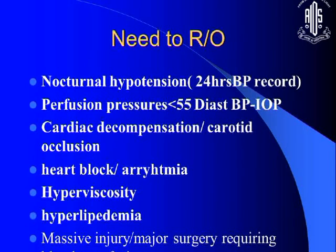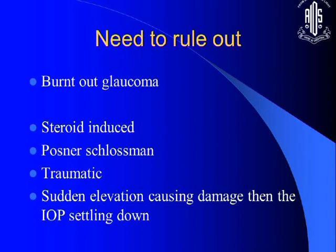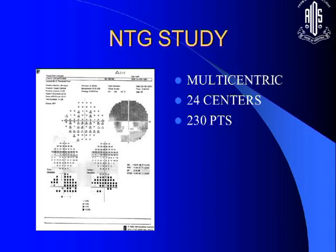It is well known that if diastolic blood pressure minus intraocular pressure is less than 55, blood is not adequately reaching the eye — perfusion pressure is inadequate and optic nerve changes will occur. I obtain a 24-hour ambulatory BP recording in all such cases. You must also rule out burnt-out glaucoma: for example, steroid-induced glaucoma that resolved after steroids were stopped, leaving behind damage. The same applies to Posner-Schlossman syndrome, traumatic, or sudden IOP elevations — the damage is not progressive, but you may keep treating unnecessarily.